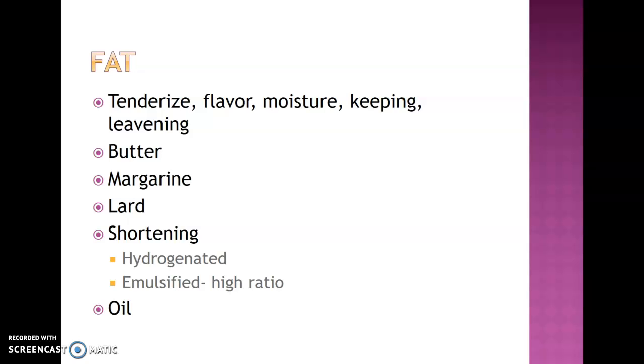Your shortening, there's hydrogenated or your vegetable shortening, and then your all-purpose shortening. Your emulsified shortening or high-ratio shortening is a very specific shortening used for high-ratio recipes. There's a high ratio of liquid and eggs to your sugar and to your dry goods.